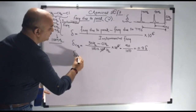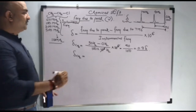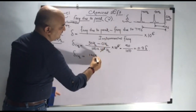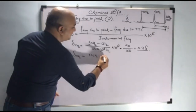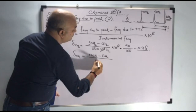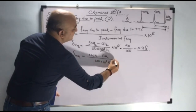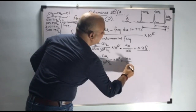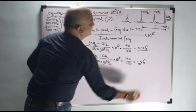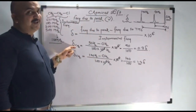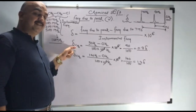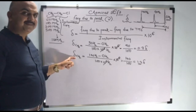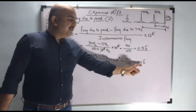Now we are going to find out the chemical shift for CH2. Frequency due to the CH2 peak is 140 hertz. Frequency due to TMS is 0. Instrumental frequency is 100 into 10 raised to 6 hertz, which gets cancelled. So 140 divided by 100 equals 1.4 delta. Notice that CH3 protons are more shielded and absorb maximum magnetic field but have a lower chemical shift, while CH2 protons absorb less magnetic field but have a higher chemical shift value.